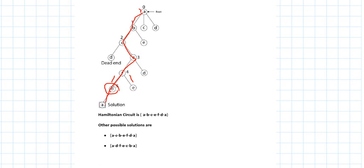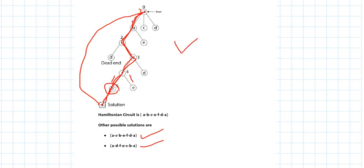Starting from the start node and coming back to the same node — that is what we call a Hamiltonian circuit. Other possible solutions are: A → C → B → E → F → D → A, and A → D → F → E → C → B → A. So we construct the state space tree and sum up — the Hamiltonian circuits are found.